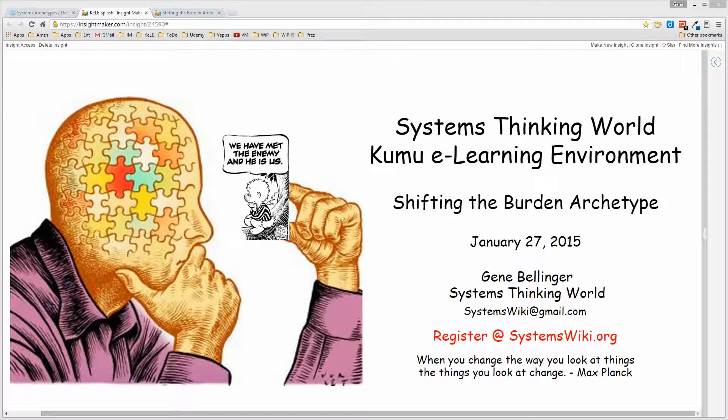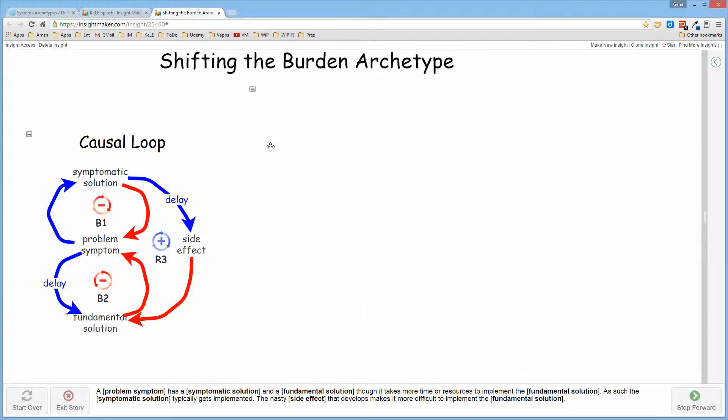In this video I want to talk about the shifting the burden archetype. This archetype is a couple of balancing loops interacting in such a way that given a particular situation there is a symptomatic solution which is quick and dirty and doesn't require too many resources.